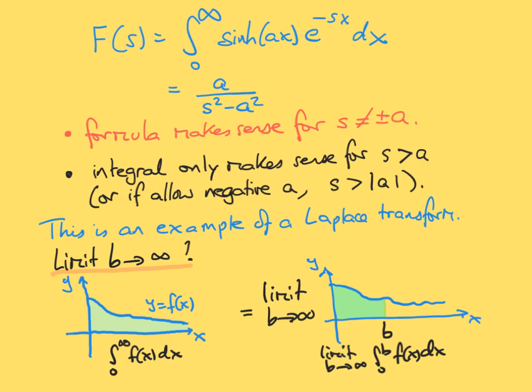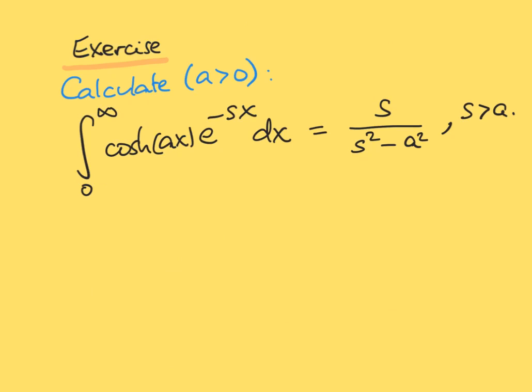So on the next slide, the last slide, I'm just going to give you another exercise that you are welcome to look at. So finally, I have here replaced the sinh of AX by cosh of AX. I'm again suggesting that you take A to be positive and asking you to calculate that. And what you will obtain is that you get S, this parameter, over S squared minus A squared. But you will also find that this integral only converges if S is greater than A. So that's to allow you to practice what we have done in this video. And with that, I will stop.